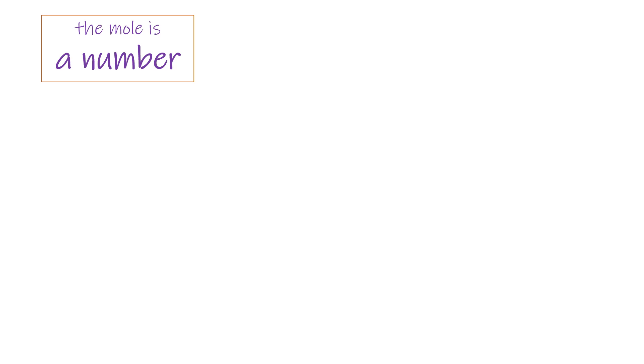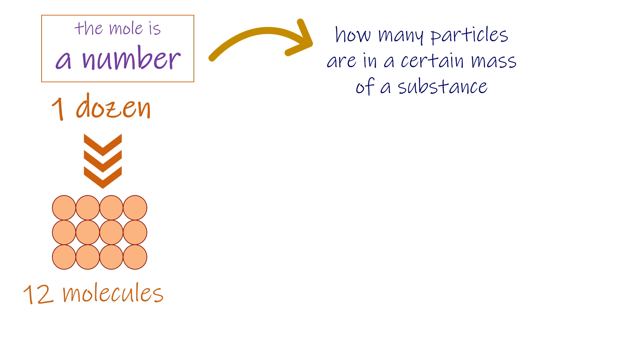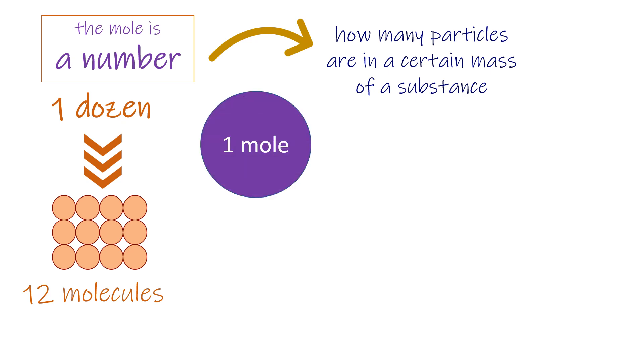Using moles tells you how many particles you get in a certain mass of a substance. A dozen molecules is 12 molecules. While a mole of molecules is 6.02 times 10 to 23 molecules.